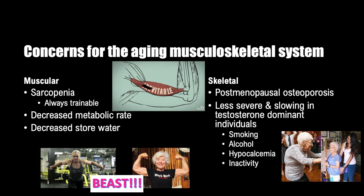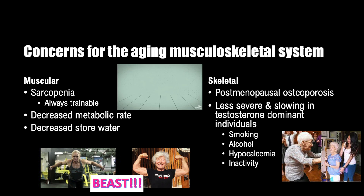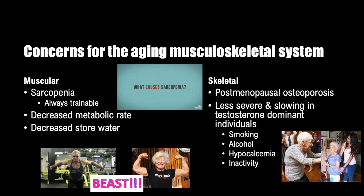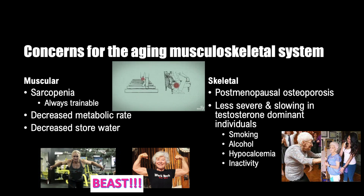As the body ages, bone remodeling and mineralization takes longer to accomplish. Bone resorption exceeds bone creation, especially in postmenopausal estrogen-dominant individuals. Estrogen typically decreases the ability of RANKL to initiate the resorption process. When levels of estrogen decline, more RANKL is available for stimulation of the RANKL receptor, increasing bone resorption but not bone formation. We see an overall reduction in bone mass — by the age of 70, most estrogen-dominant individuals have lost 50% of their total bone mass. This can lead to pain, deformity, and severe fractures, limiting mobility and ability.